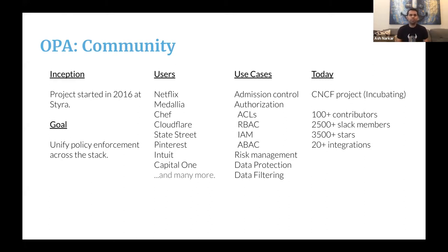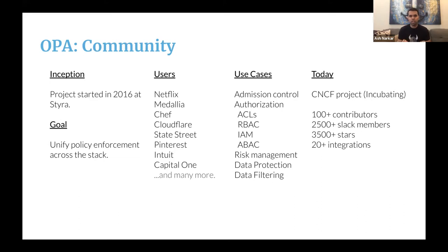A bit about OPA's community: the project was started in 2016 at Styra, where I work, and the goal of the project has been to unify policy enforcement across the stack. One of the earliest adopters of OPA was Netflix, and they've been using OPA for authorizing their HTTP and gRPC APIs. You have other companies like Cloudflare, banks like State Street and Capital One, and companies like Pinterest, Intuit, and many more who are using OPA in production for use cases such as admission control, ABAC, RBAC, risk management, data filtering, and much more.